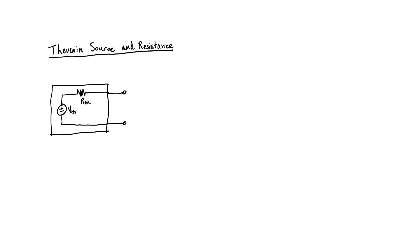You might recall that in order to find the Thevenin equivalent voltage, we merely have to measure the voltage at the two terminals without anything attached to it. To find the Thevenin equivalent resistance, we merely need to find the equivalent resistance looking back by zeroing out all of the sources.